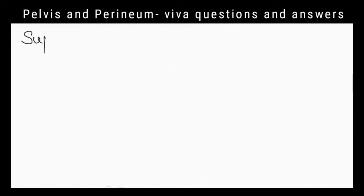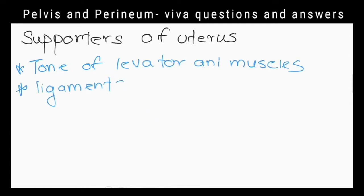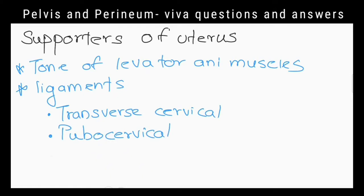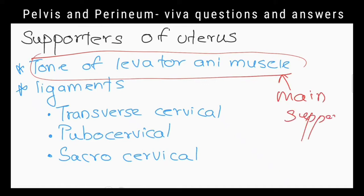What are the supporters of the uterus? The tone of the levator ani muscle, transverse cervical, pubocervical, and sacrocervical ligaments. The main supporter of the uterus is the levator ani muscle.